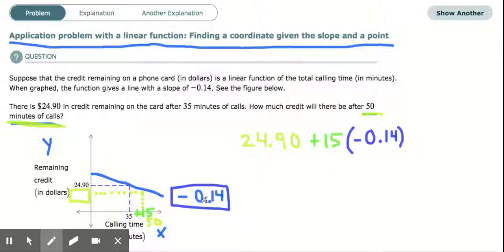So this would be equal to 24.90 or 24.9 plus whatever 15 times 14 is, but this is going to be negative, right? Because a positive times a negative will be negative.